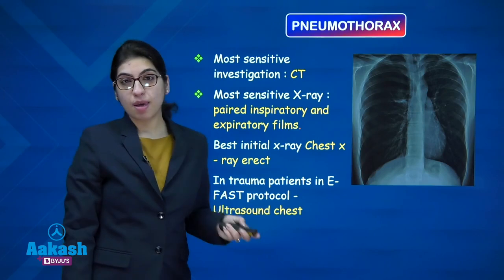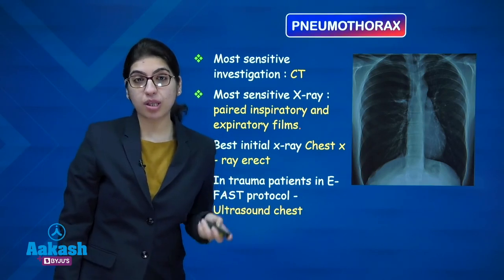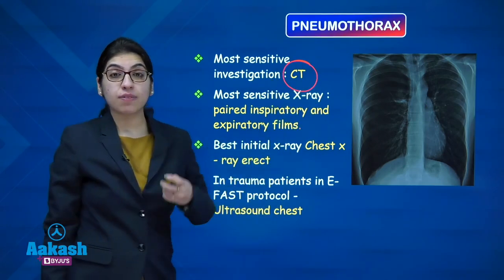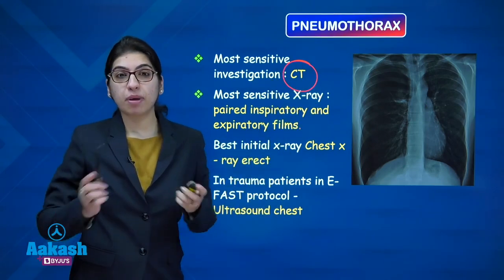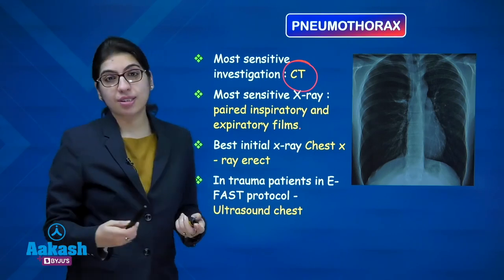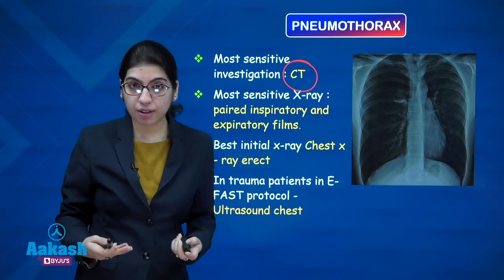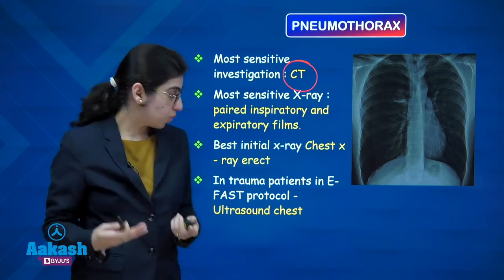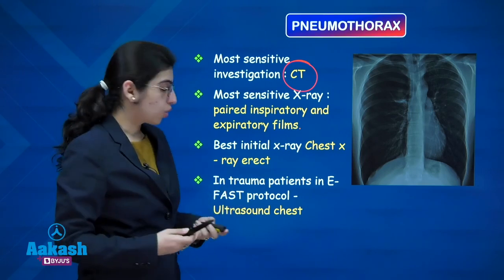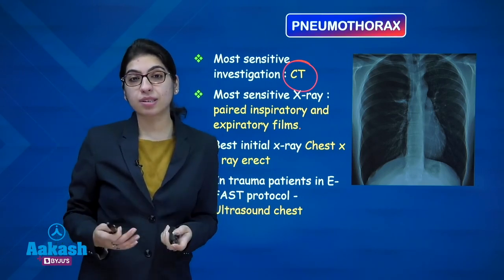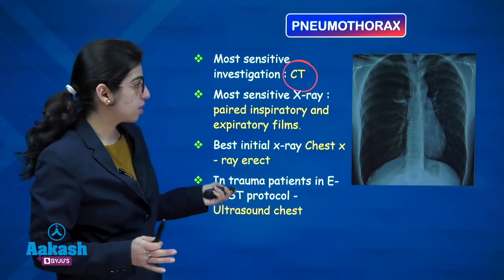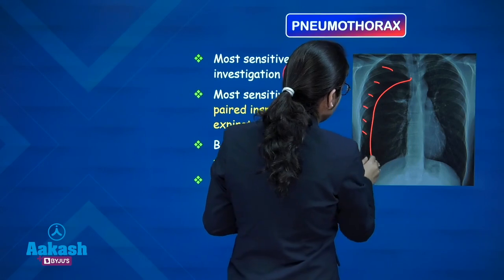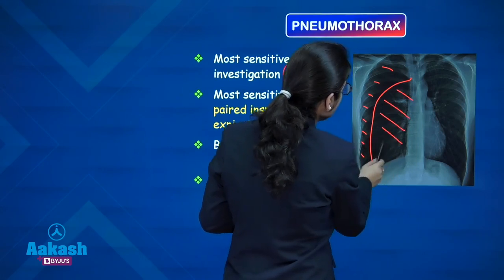For pneumothorax, if air is present anywhere in the body the investigation of choice is CT scan. The most sensitive X-ray view is the paired inspiratory-expiratory view. The initial X-ray done is always the chest X-ray erect view. In trauma patients, the E-FAST protocol assesses pneumothorax on chest ultrasound. Pneumothorax appears as clear air lucency without bronchovascular markings with underlying collapsed lung.